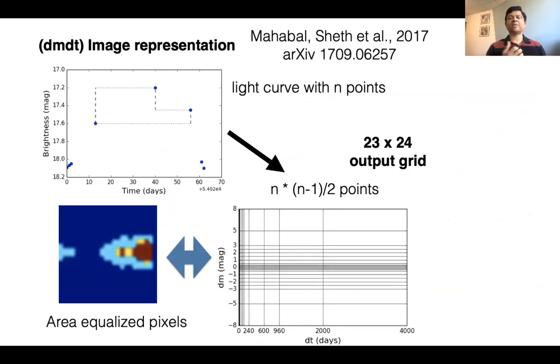One of the other things we do is also convert the light curves into image representation so we can use something like deep learning CNNs. Here, for instance, what you see is you've got n points.